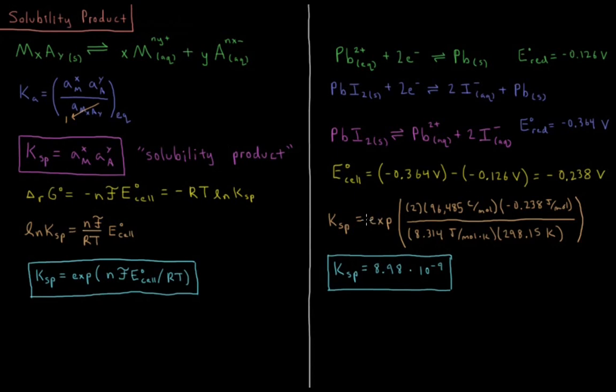So our Ksp is going to be the exponential of how many electrons flow during this reaction. That's going to be 2. 2 times 96,485 coulombs per mole is F. The E naught of the cell,